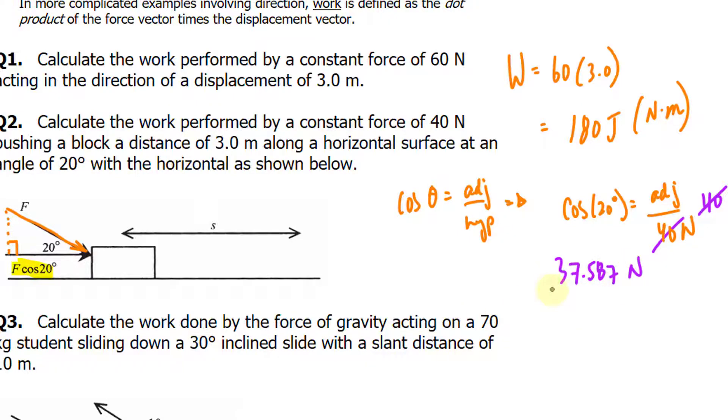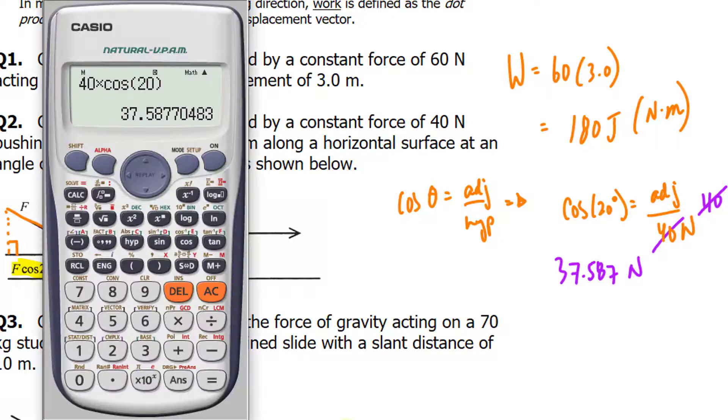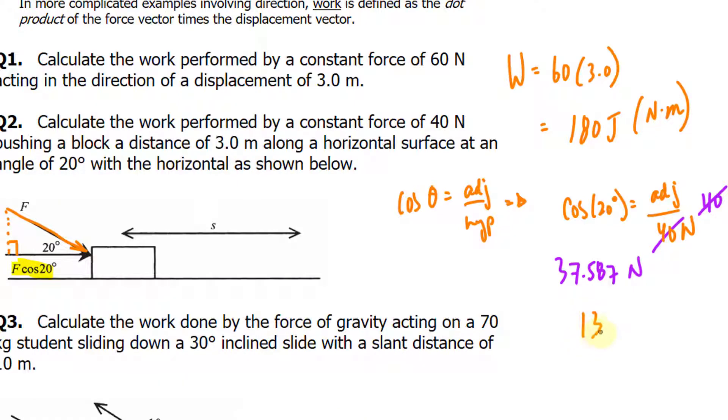Multiplying this number by 3.0, let's use our calculator, gives us 112.7. For simplicity I'll just write down 113, so 113 newton-meters or simply joules.